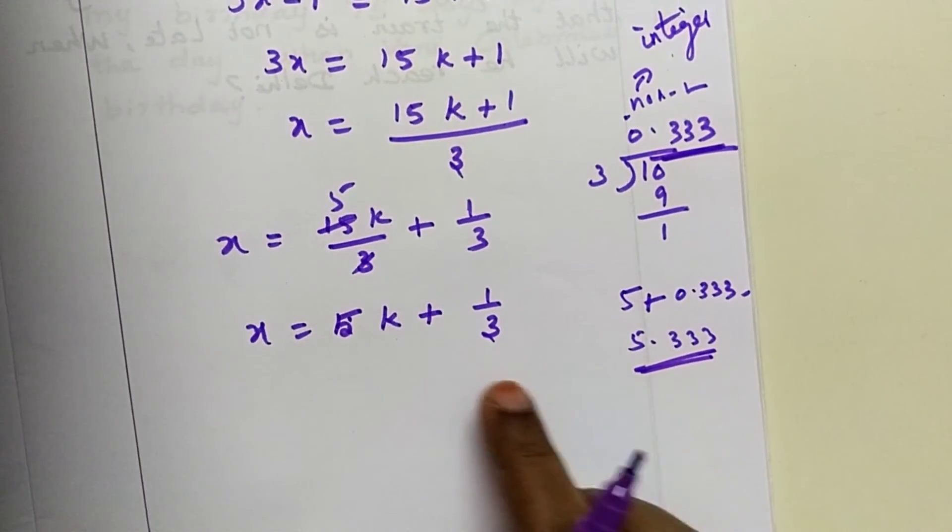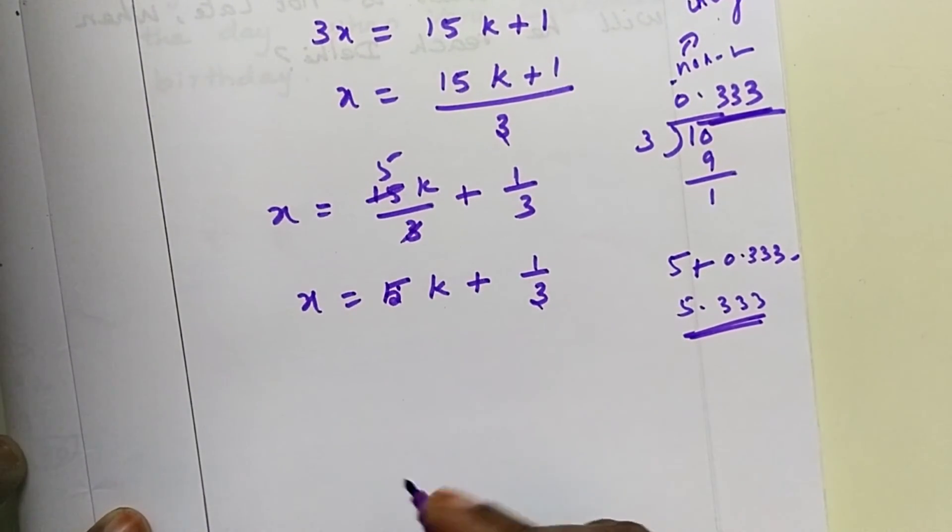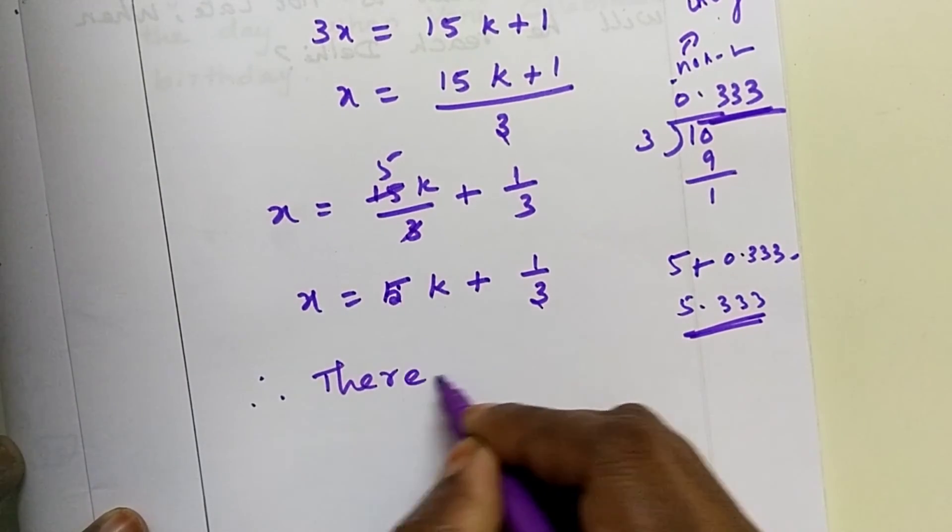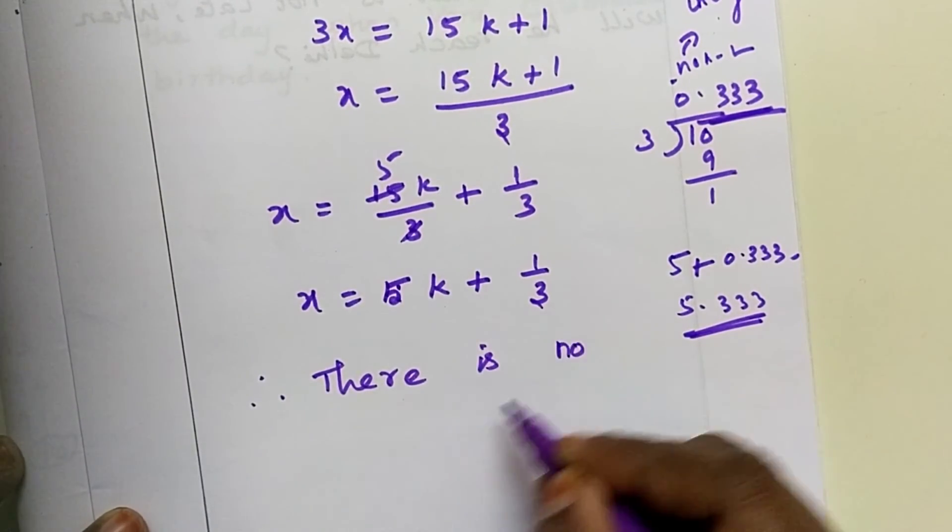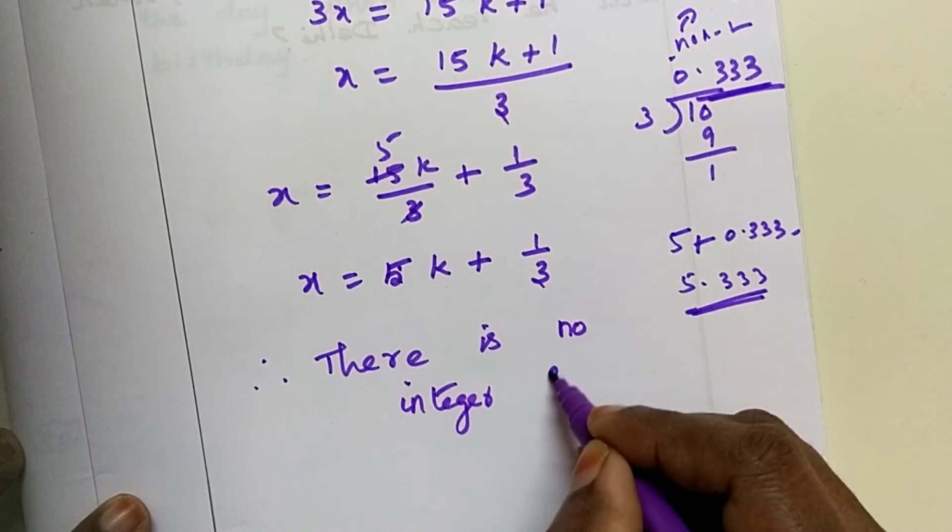So therefore, you never get an integer for this 1 by 3. Therefore, there is no solution. There is no integer solution.